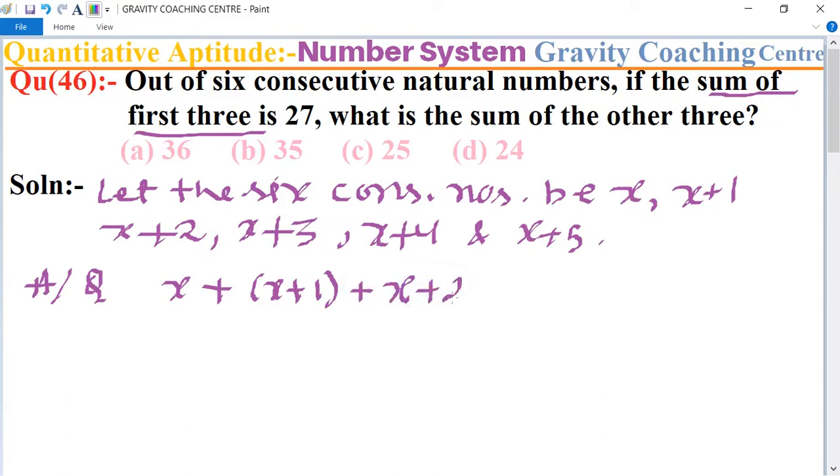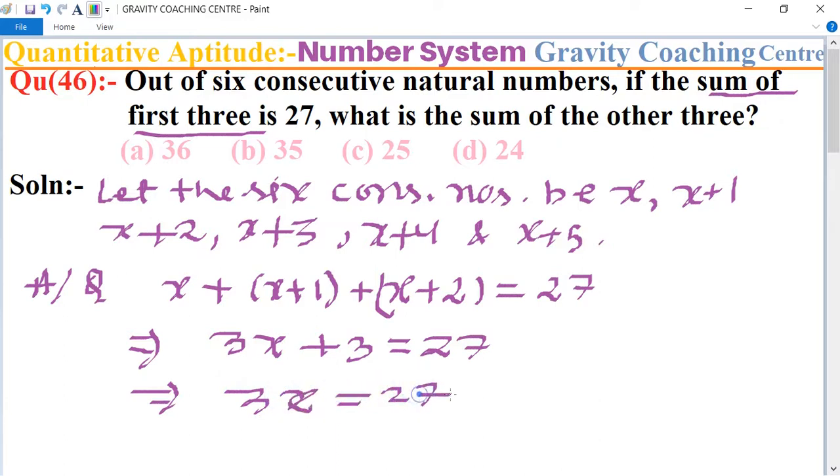Now we add: 3x plus 3 equals 27. So 3x equals 27 minus 3, which equals 24. 24 divided by 3 gives us x equals 8.